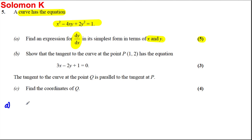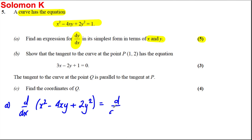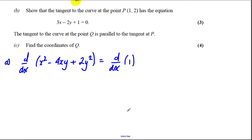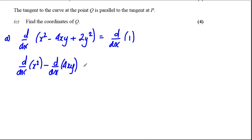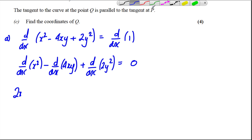Let's differentiate both sides with respect to x as always. Let's differentiate each component of each side. This is the same as d/dx of x squared, subtract d/dx of 4xy, plus d/dx of 2y squared. And d/dx of 1 is clearly 0, so this is 2x here.